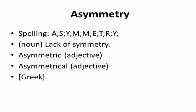Asymmetry. Spelling: A-S-Y-M-M-E-T-R-Y. Noun. Lack of symmetry. Asymmetric (adjective). Asymmetrical (adjective). Greek.